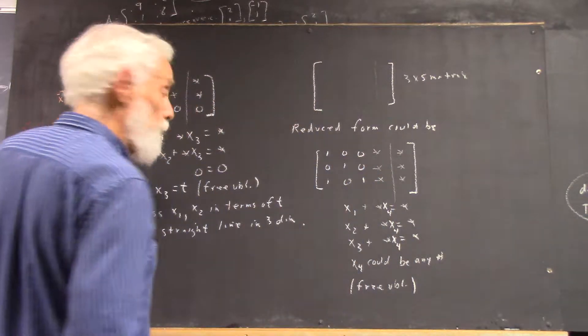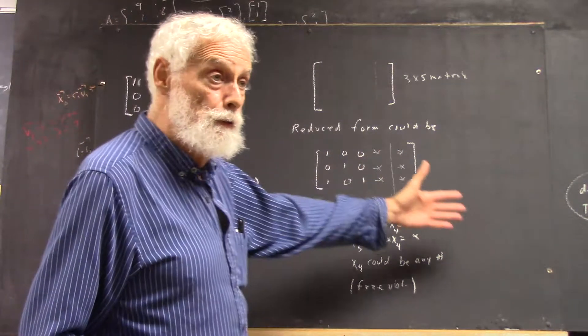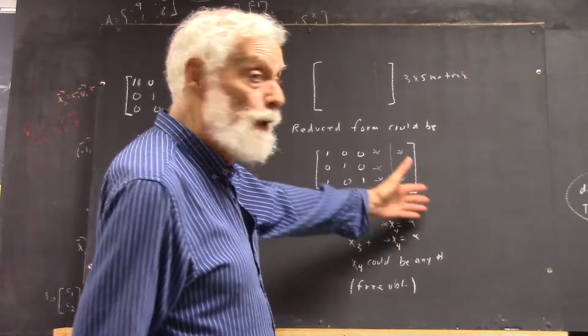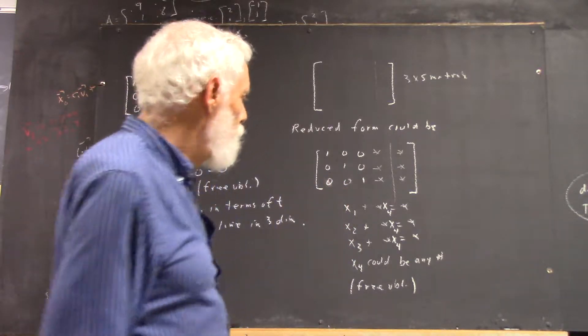So, it's just analogous to this. Except we don't have a row of zeros. Okay. So, we don't have any contradiction. I've got a one there. I'm sure it's a zero. Okay.